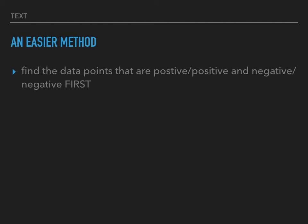An easier method: cull out the data points that are positive for both Test A and the gold standard — those are all going to be true. Also, negatives from both Test A and the gold standard are also going to be true. Whether they're positive or negative, you still have to look.